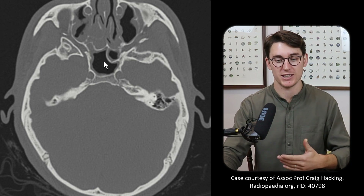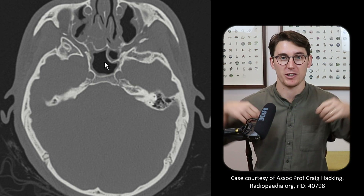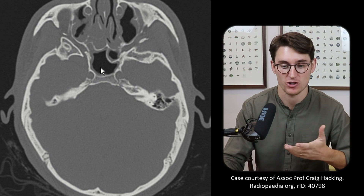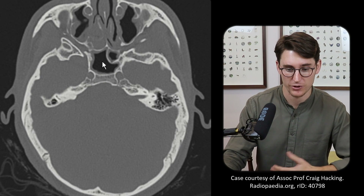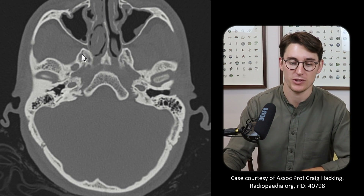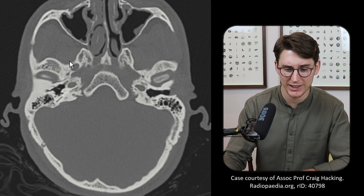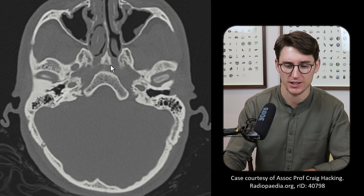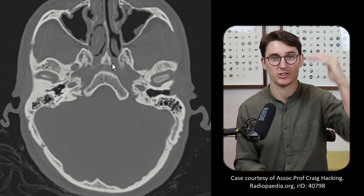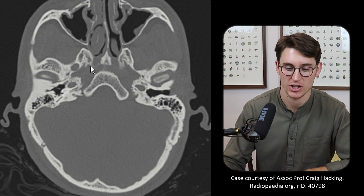The foramen rotundum runs from anterior to posterior — unlike most foramina which run superior to inferior. Scrolling down further, we see another foramen forming posteriorly and laterally to the foramen rotundum. This is the foramen ovale — quite easy to identify as it's nice and big. That carries our third division, the mandibular division of the trigeminal nerve. So those three foramina — the superior orbital fissure, the foramen rotundum, and the foramen ovale — carry the three divisions of our trigeminal nerve.